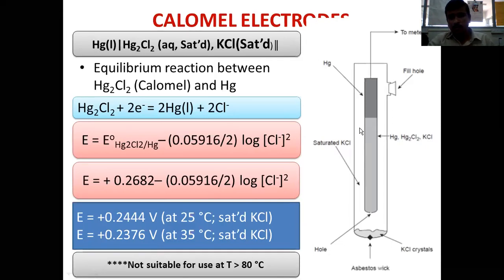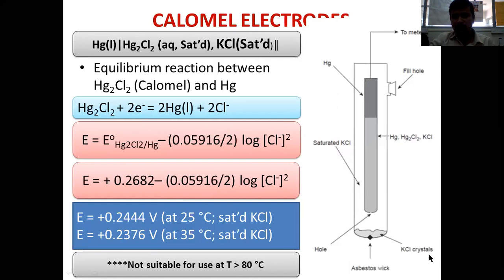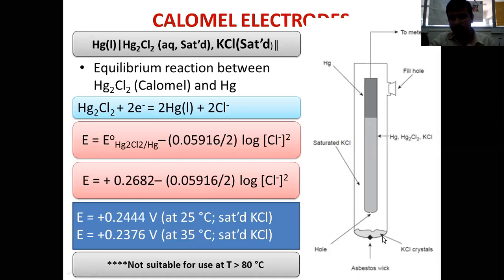The construction of the calomel electrode is very simple. You need two tubes — one external tube and one internal tube. The external tube is filled with saturated KCl and a few crystals of KCl. There is a provision to fill the KCl solution through a hole, which you will see in the laboratory while using the saturated calomel electrode. The KCl crystals settle at the bottom of the external tube.